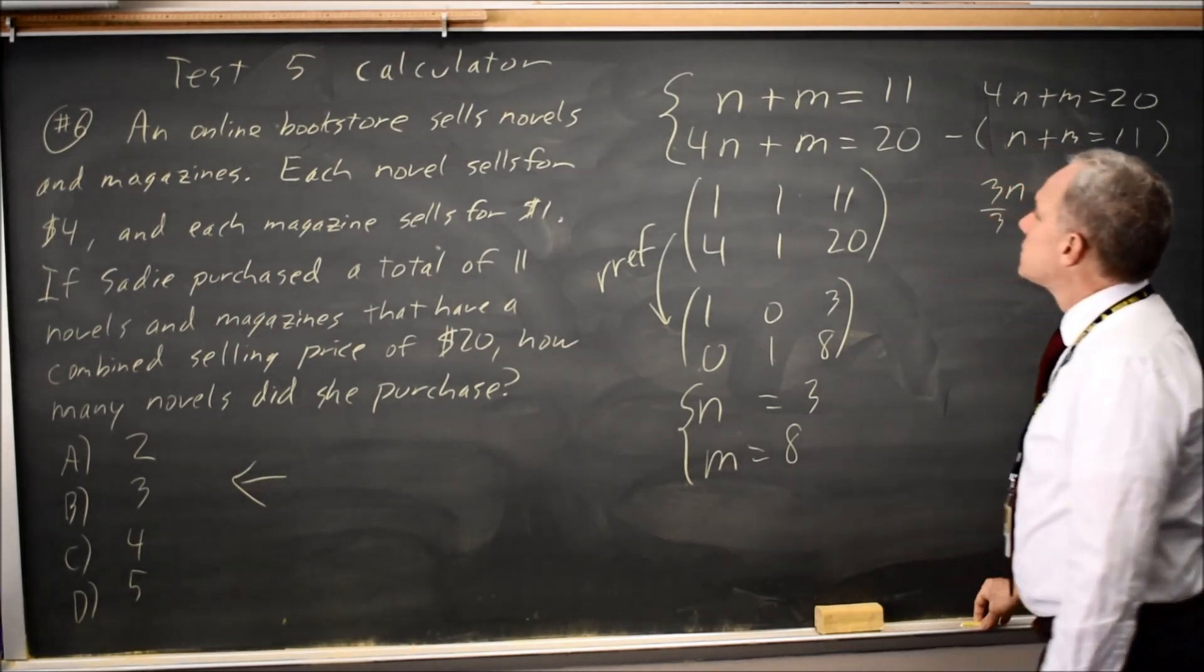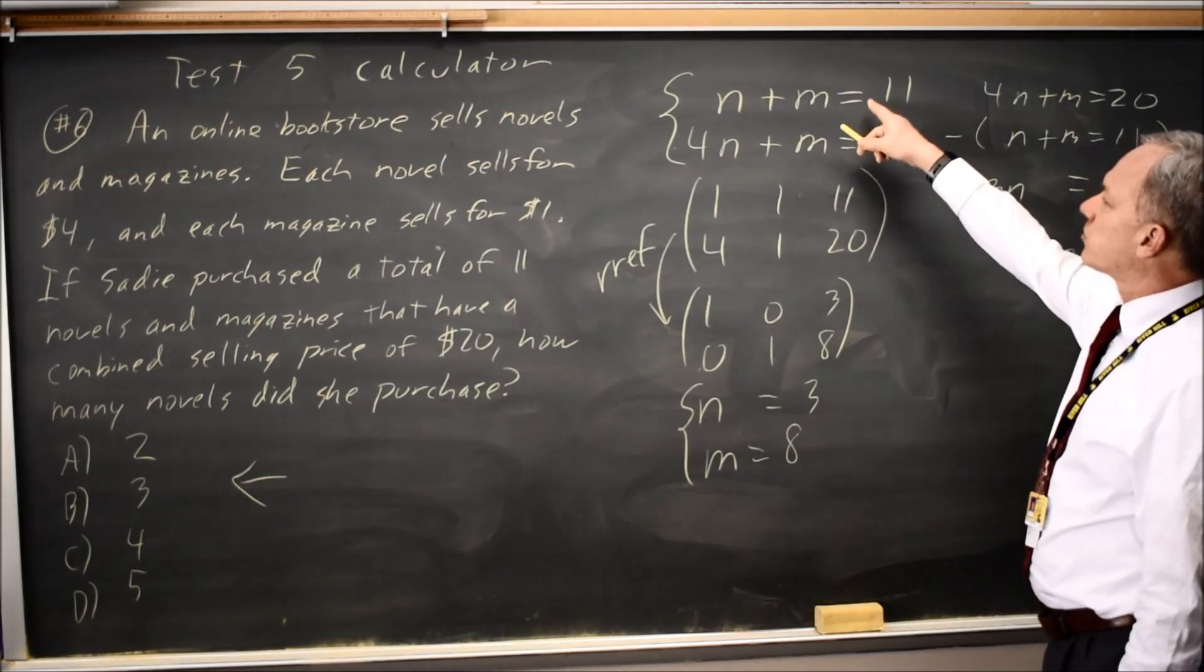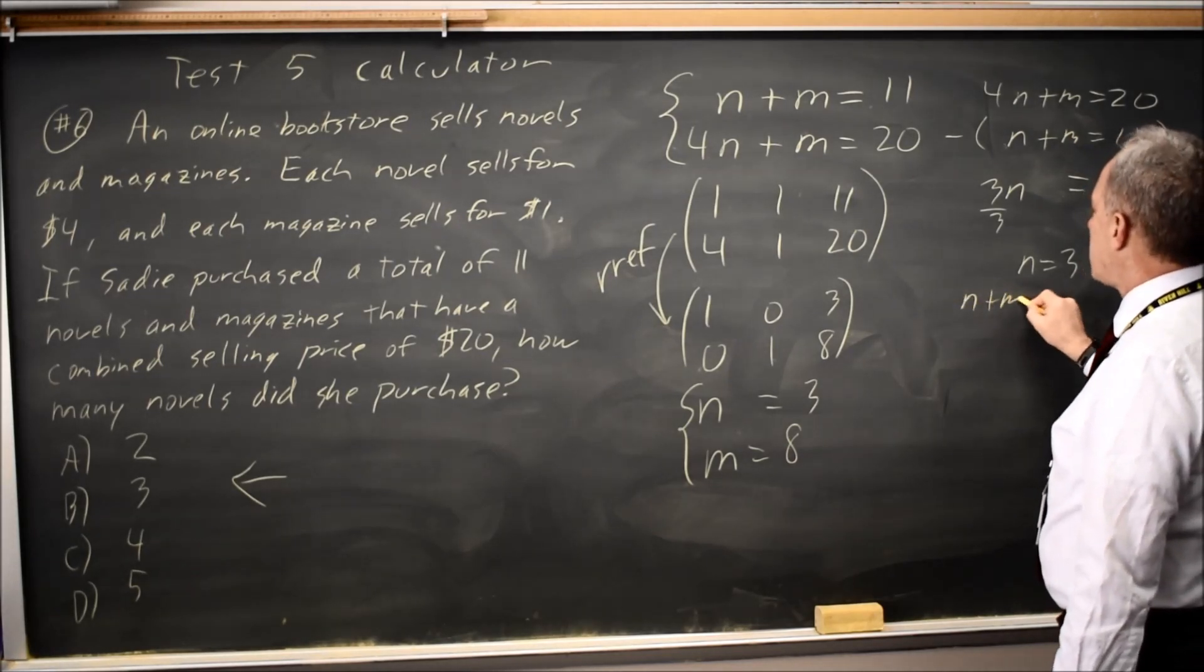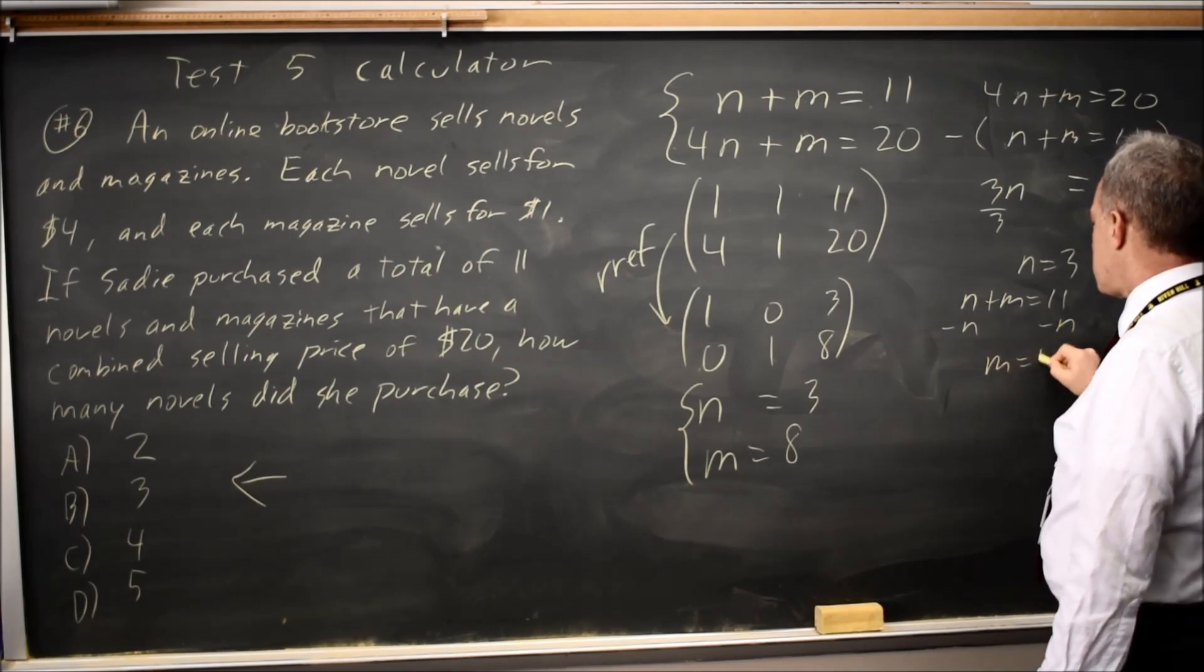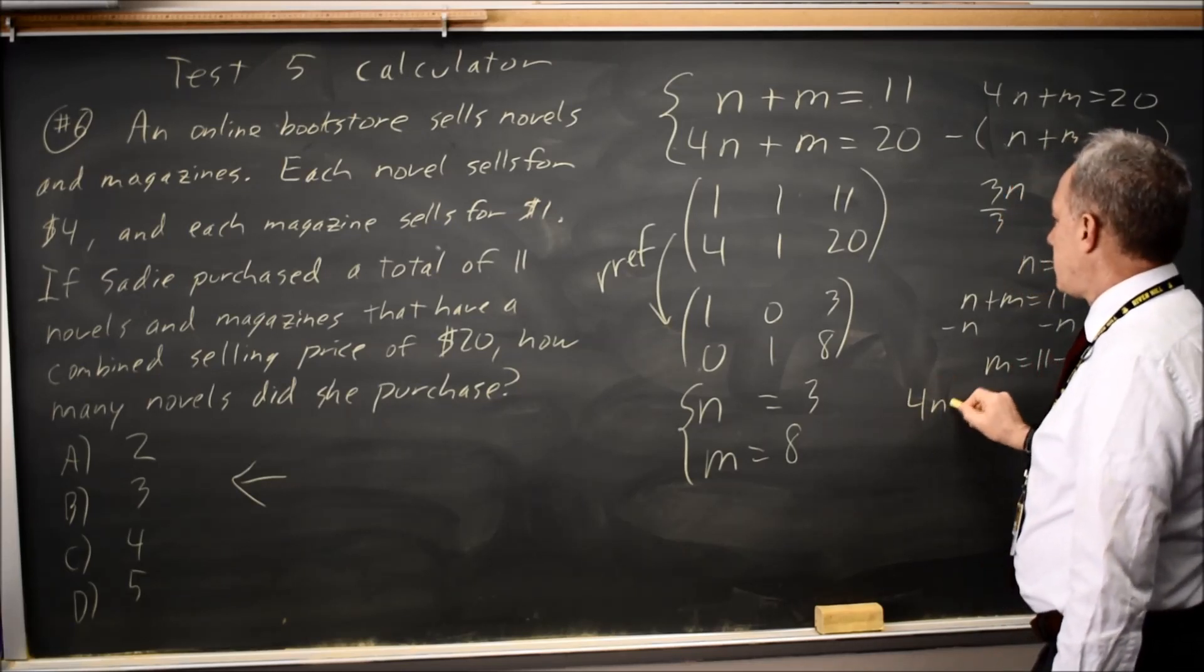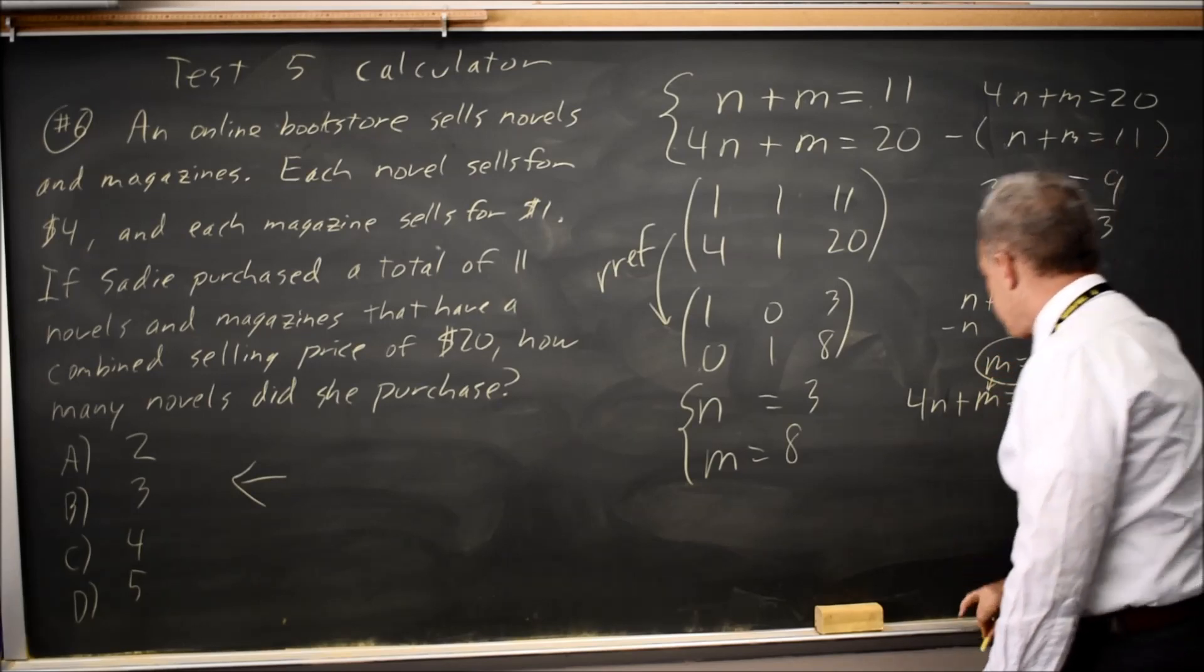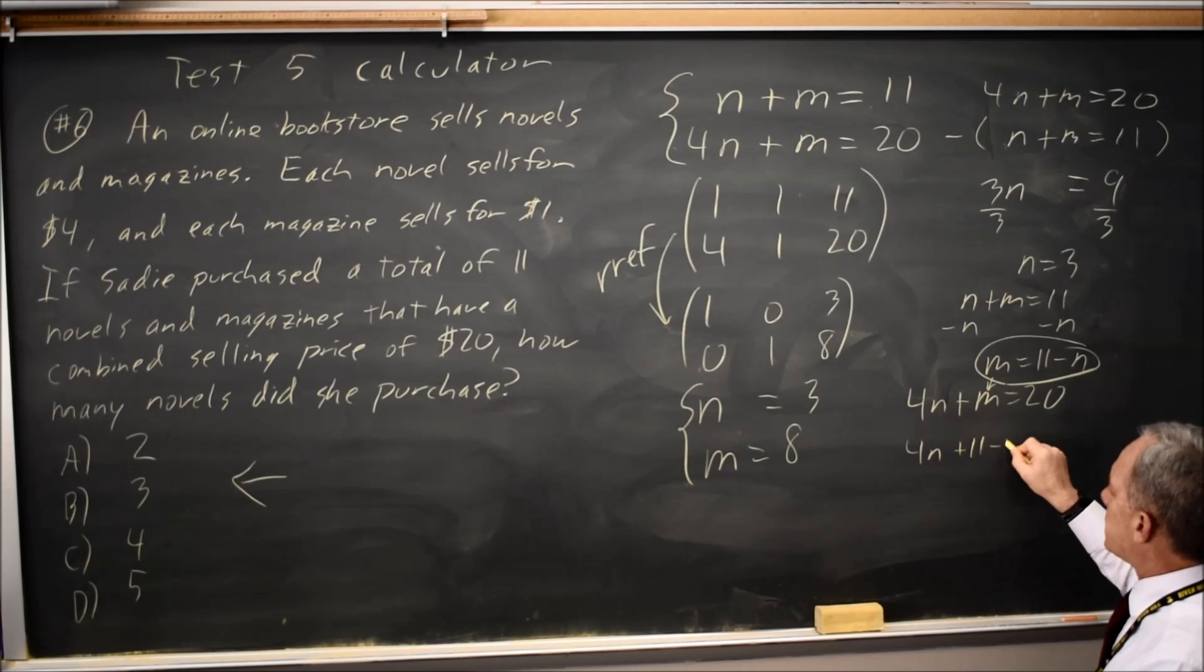I have other options. I could solve, since I'm looking for n, I can solve the first equation for m. n plus m equals eleven, so m equals eleven minus n. Substitute this n to m in the second equation. Four n plus m equals twenty. When I substitute this in for m, it becomes four n plus eleven minus n equals twenty.